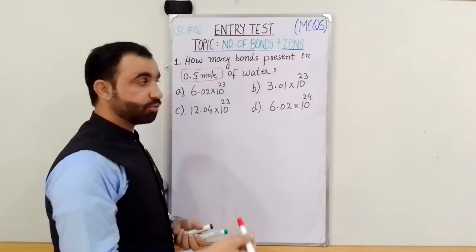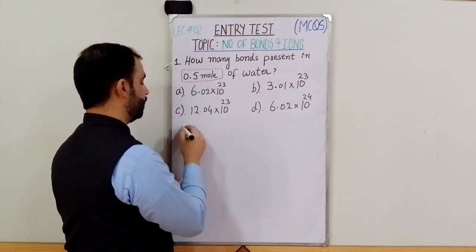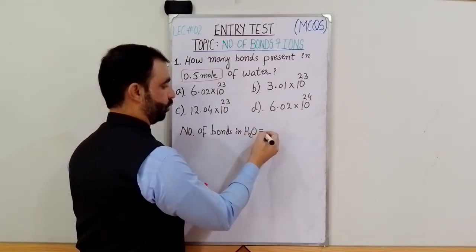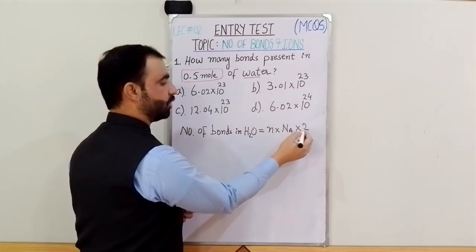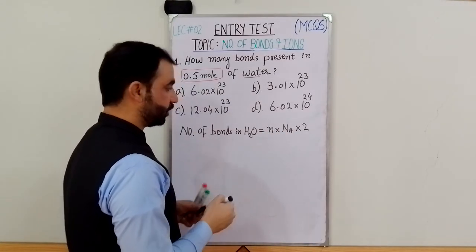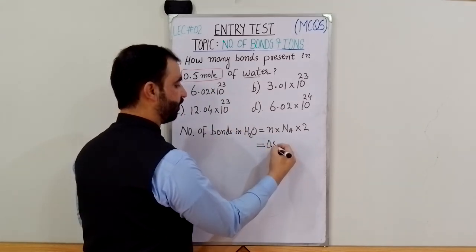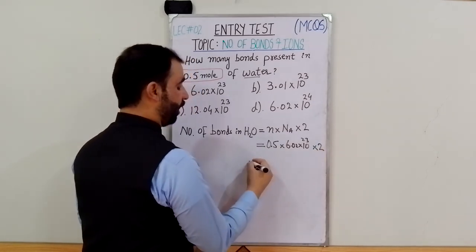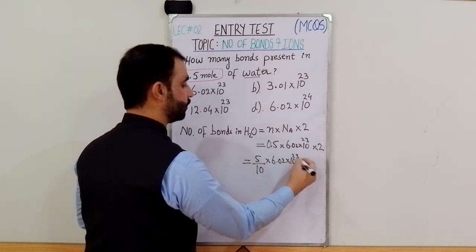Now we solve the number of bonds. The number of bonds per molecule is 2. We have 0.5 moles. Using the formula from the last video: number of bonds equals moles multiplied by Avogadro's number multiplied by 2. So it is 0.5 multiplied by 6.02×10²³ multiplied by 2.